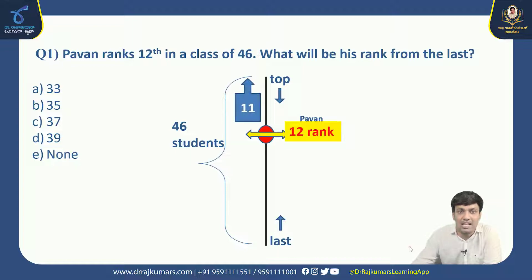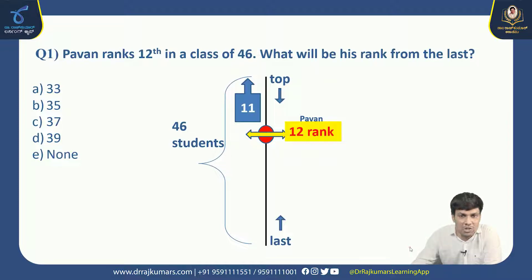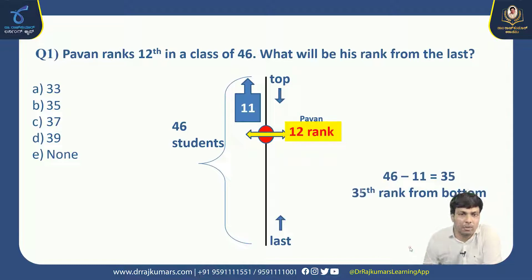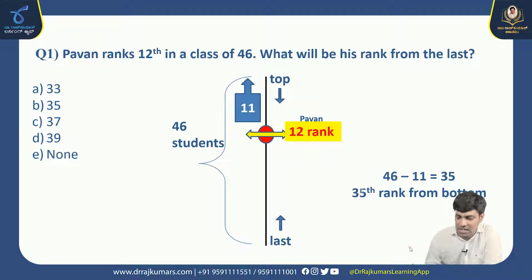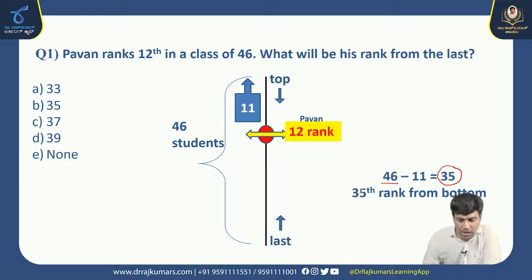It means behind Pavan, there are 11 persons who have scored more than Pavan. We need to find out Pavan's rank from the bottom. We have 46 students. We need to minus those 11 students behind Pavan. So 46 minus 11 is equal to 35. Thus 35 is Pavan's rank from the bottom order. The right answer is option B.